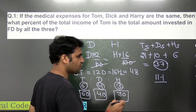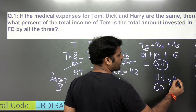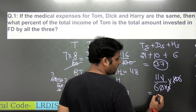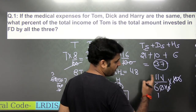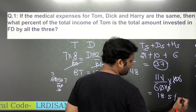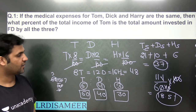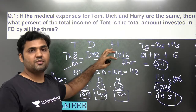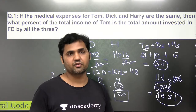Now we need to find 11.1 as a percentage of Tom's total income of 60. So (11.1 / 60) × 100 = 111 / 6 = 18.5%. Therefore, 18.5% is the exact answer — the amount invested in FD by all three is 18.5% of Tom's total income.